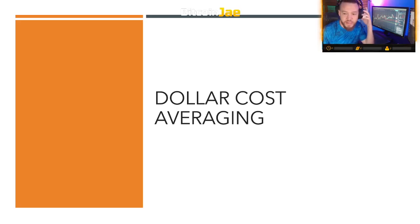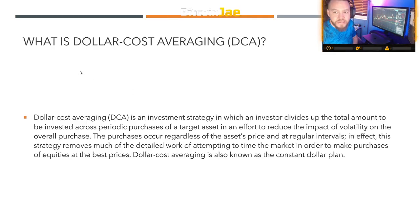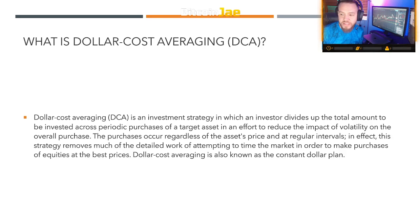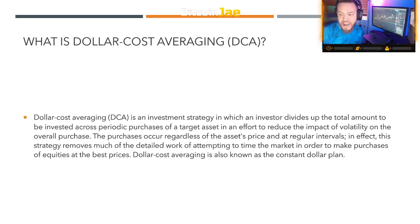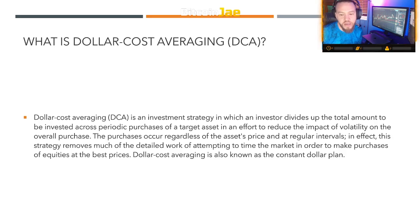So what is dollar cost averaging, also known as DCA? Dollar cost averaging is an investment strategy in which an investor divides up the total amount to be invested across periodic purchases of a target asset, in an effort to reduce the impact of volatility on the overall purchase. The purchases occur regardless of the asset's price and at regular intervals, removing much of the work of attempting to time the market.